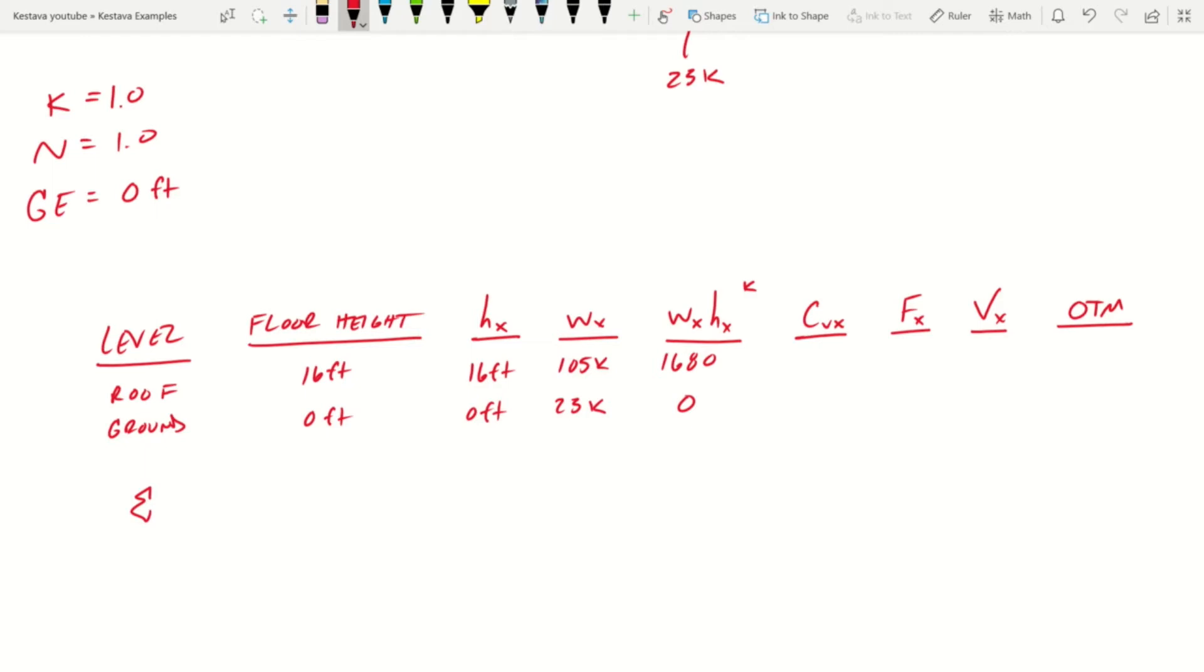cvx is the portion of this value divided by the summation of all levels of that value. So the summation, that's why we have our summation here, wx. Let's start back off here. wx is 128 kips. Summation of wxhx is just 1680 because 0 doesn't add anything to it. That means cvx is just equal to 1.0 at roof and then at ground, it's just 0.0.